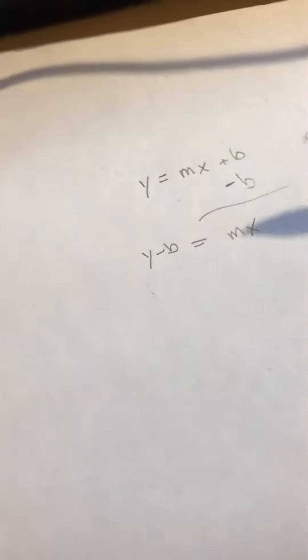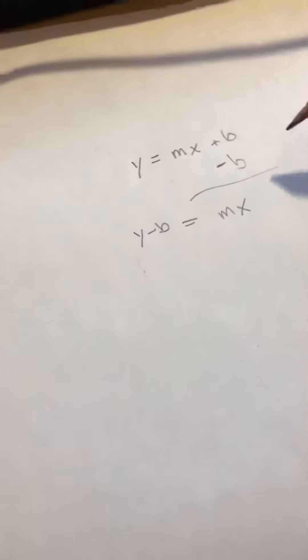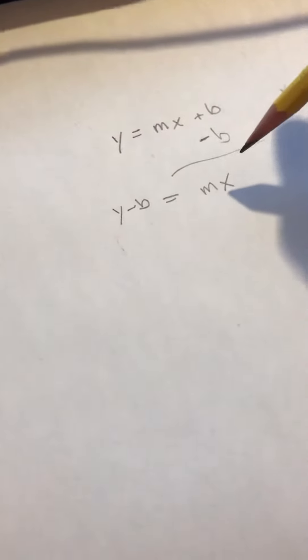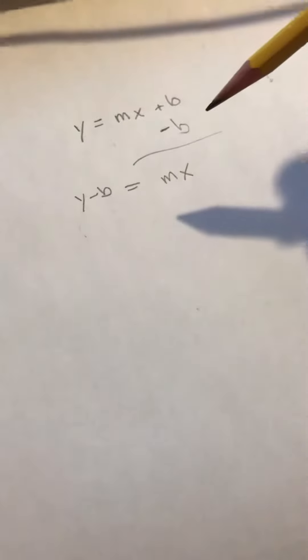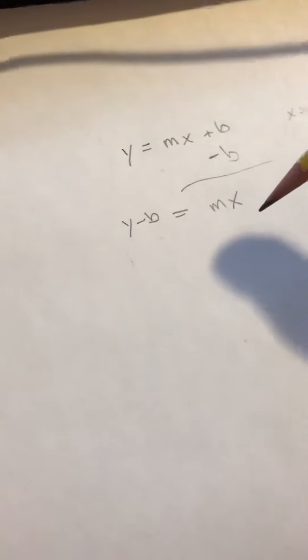So now I have Y minus B is equal to MX. And now when these two variables are just sitting next to each other like this, it means that they're being multiplied. So the opposite of multiplying something is dividing it.